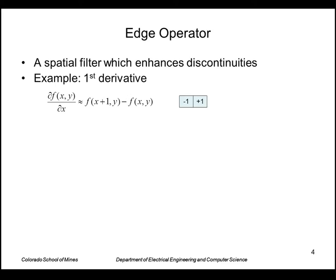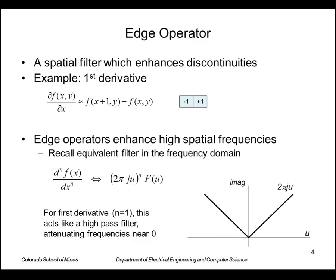An edge operator is a spatial filter which enhances discontinuities. For example, we've seen the use of the digital approximation to the first derivative, which is a 1 by 2 operator that looks like this.